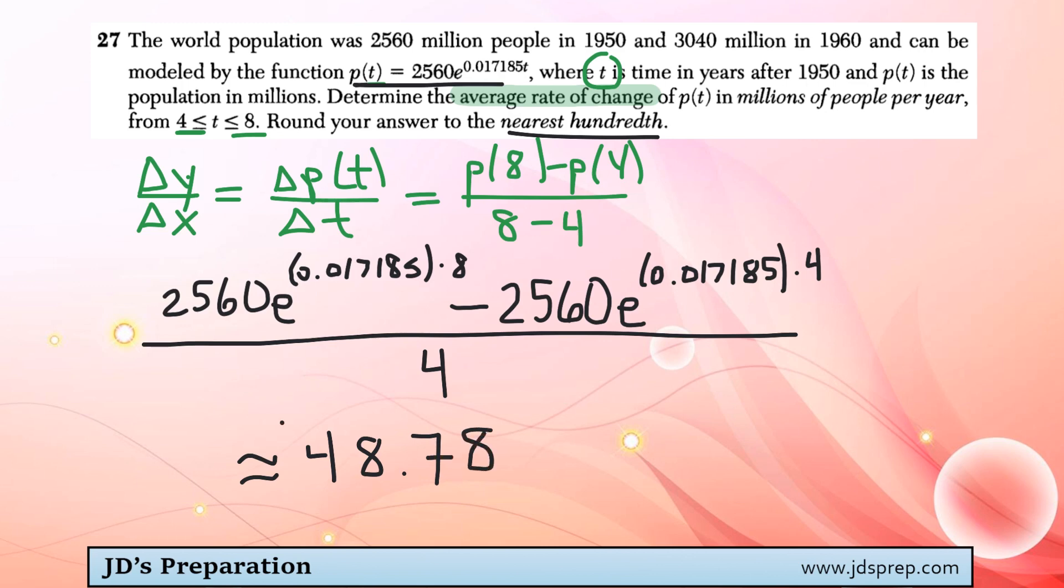So that would represent the average rate of change of p of t in millions of people per year in that interval.